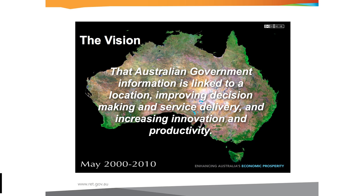There is a vision: Australian government information will be linked to a location, and this will improve decision making, policy making, productivity, and innovation in our economy. Our policy aim is to make the foundation spatial data sets free and open to the economy — not just government, not just three tiers of government, not just the FMA agencies, but the entire economy. We think the economic benefits and flow-on from that will be very significant.